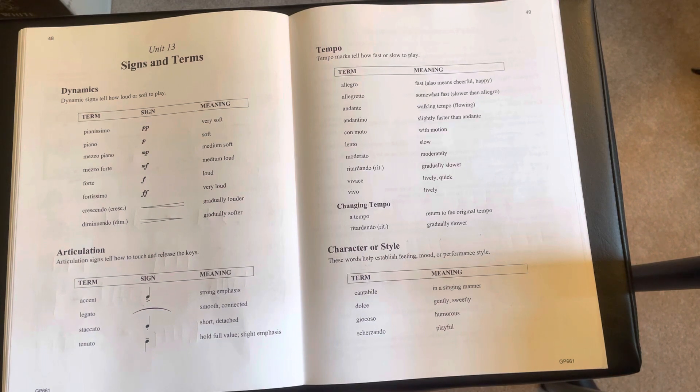Tempo refers to the speed, how fast or how slow you're playing. So we have allegro, which means fast, allegretto, which means somewhat fast, andante, walking tempo, andantino, slightly faster than andante.